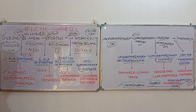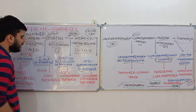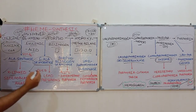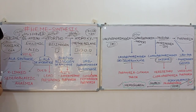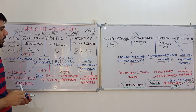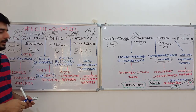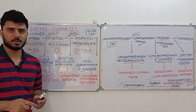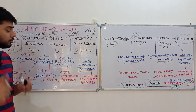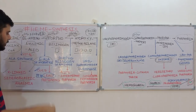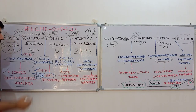Decreased delta-ALA dehydratase also causes sideroblastic anemia, but this occurs due to lead poisoning. An important clinical clue: before 1978, American paint companies used lead in their paints. If a question mentions an old house or a house built before 1978, you should think of decreased ALA dehydratase from lead poisoning. After 1978, the use of lead in paints was banned.